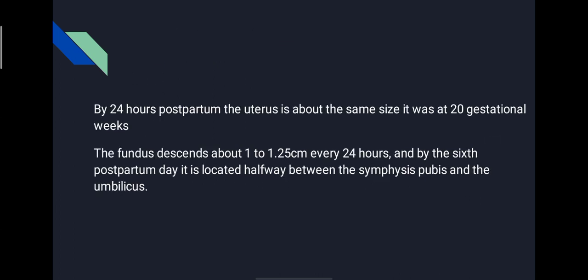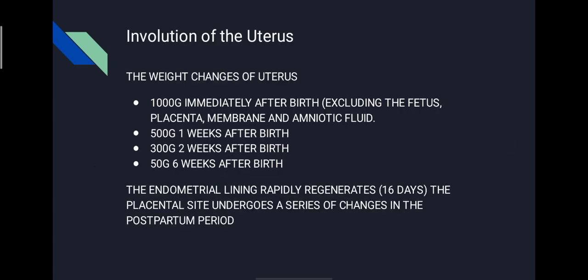During the first 24 hours, the level of the uterus remains constant. After that, the fundus descends about 1 to 1.25 cm every day, so that by the end of the second week the uterus becomes a pelvic organ, and by the end of the sixth week it returns to almost normal size. The weight changes as follows: 1000 grams immediately after birth, 500 grams one week after birth, 300 grams two weeks after birth, and 50 grams six weeks after birth.